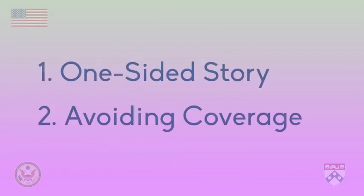To summarize, we've talked about two types of bias by omission: one-sided stories, which have bias because they aren't objective, and avoiding coverage of a story, which might happen due to a conflict of interest. Next, we're going to read about a possible instance of bias by omission in Facebook.